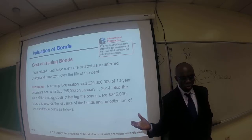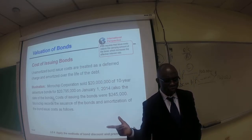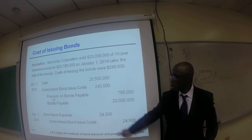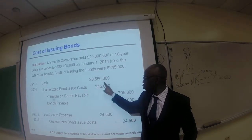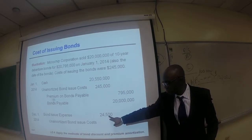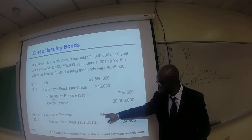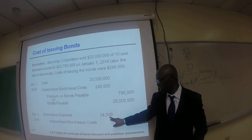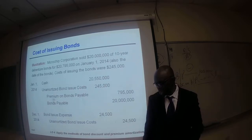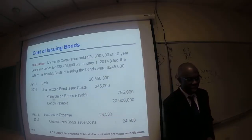Illustration: M Corporation sold $20 million of 10-year debenture bonds for $20.79 million. Issuing costs were $245,000. The most important thing is that unamortized bond issue cost is debited for $245,000 — that is an asset. Then, at the end of every year, we make an adjustment — just like depreciation. Bond issue cost expense is debited for $24,500, and unamortized bond issue cost is credited for $24,500. We do that to get rid of the $245,000 over the life of the bond.